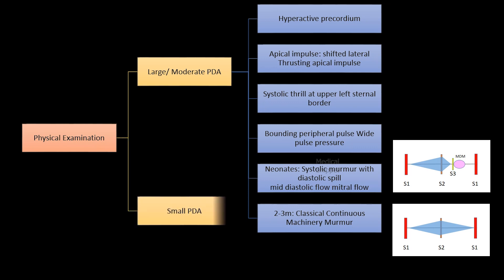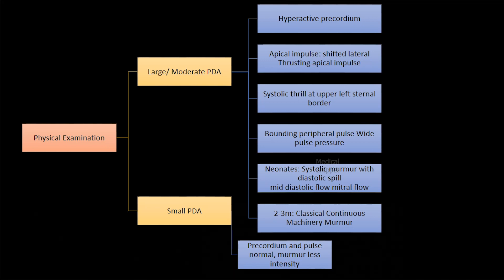In small PDA, the pulse and precordium are usually normal. The systolic or continuous murmur is of less intensity. There is no flow murmur across the mitral valve.